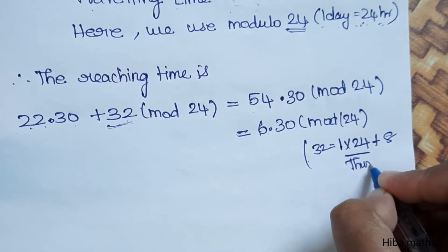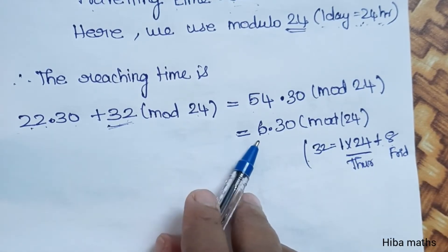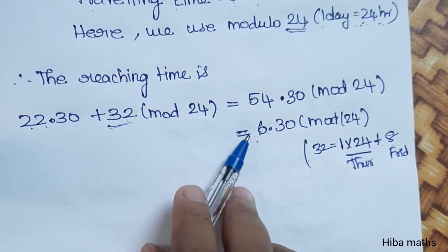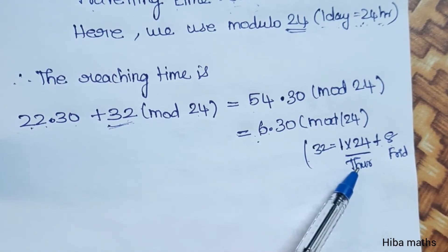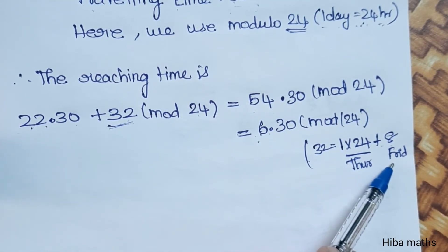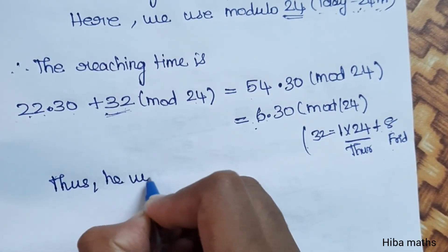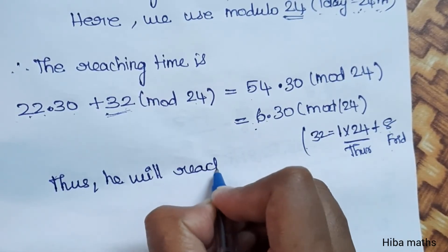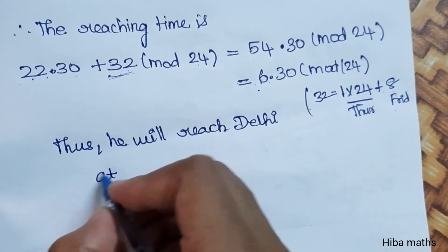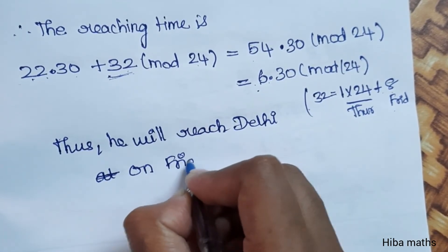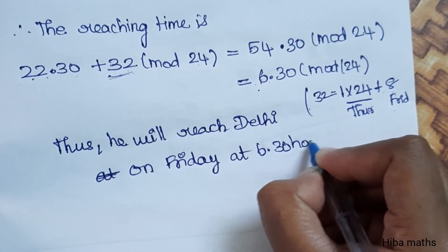24 hours is Thursday and it has to be Friday. When we reach 6:30 hours — starting Wednesday, going through Thursday, we reach on Friday. Thus, he will reach Delhi on Friday at 6:30 hours.